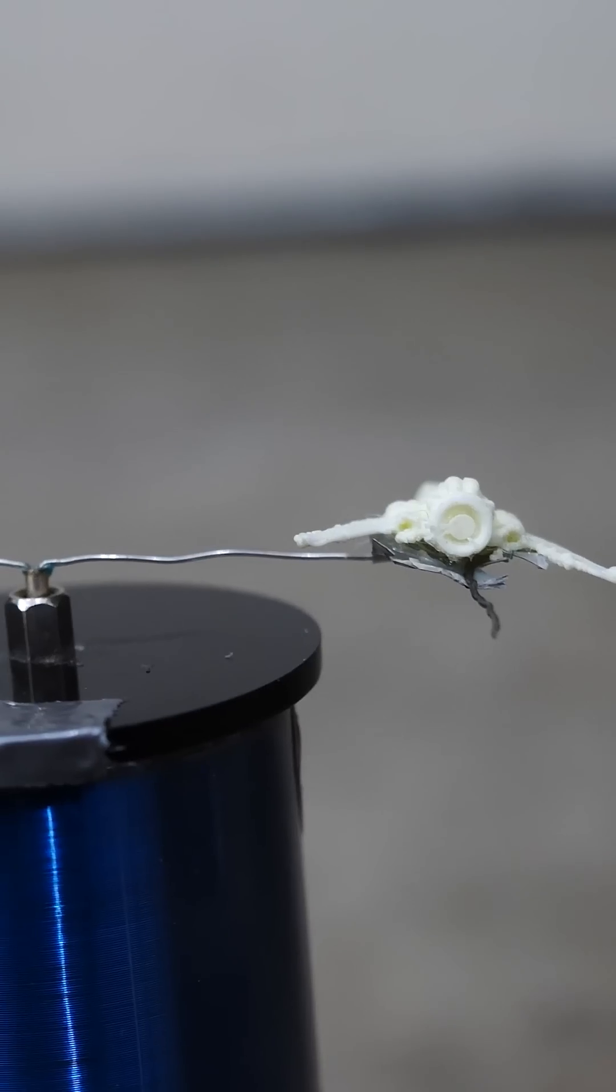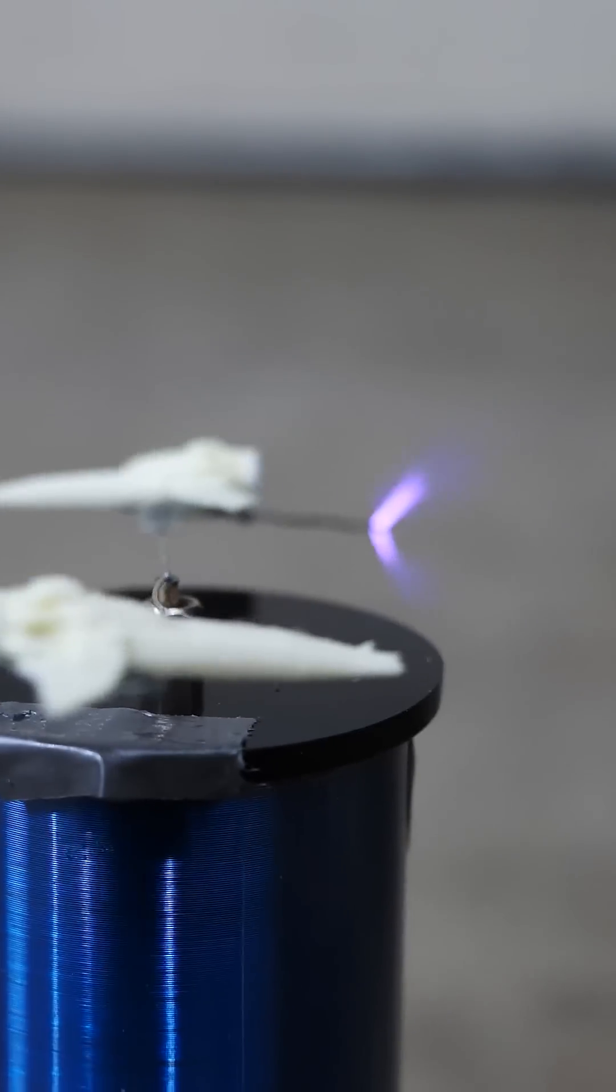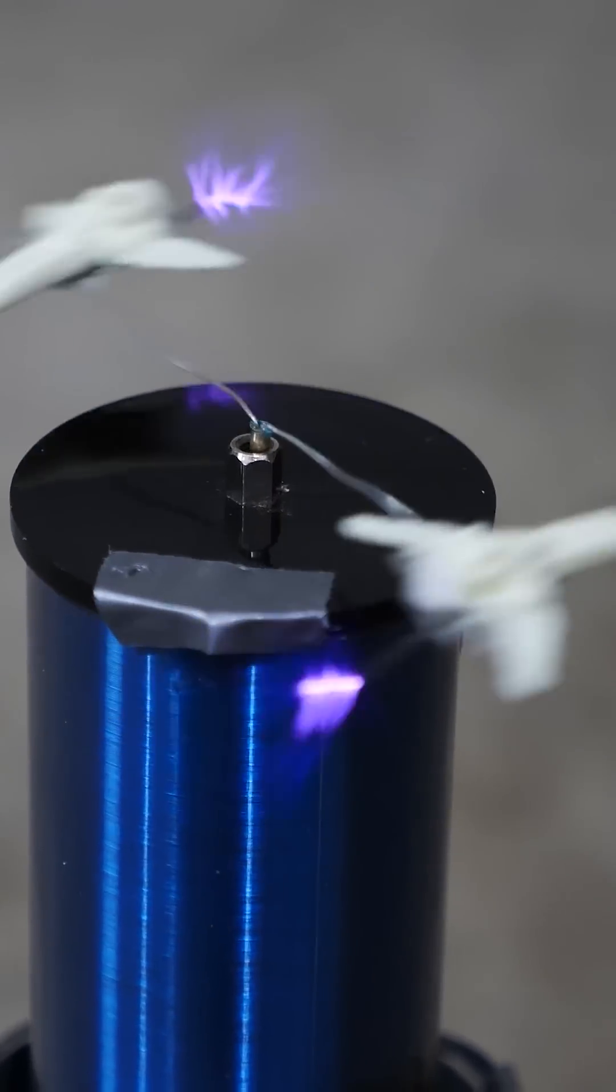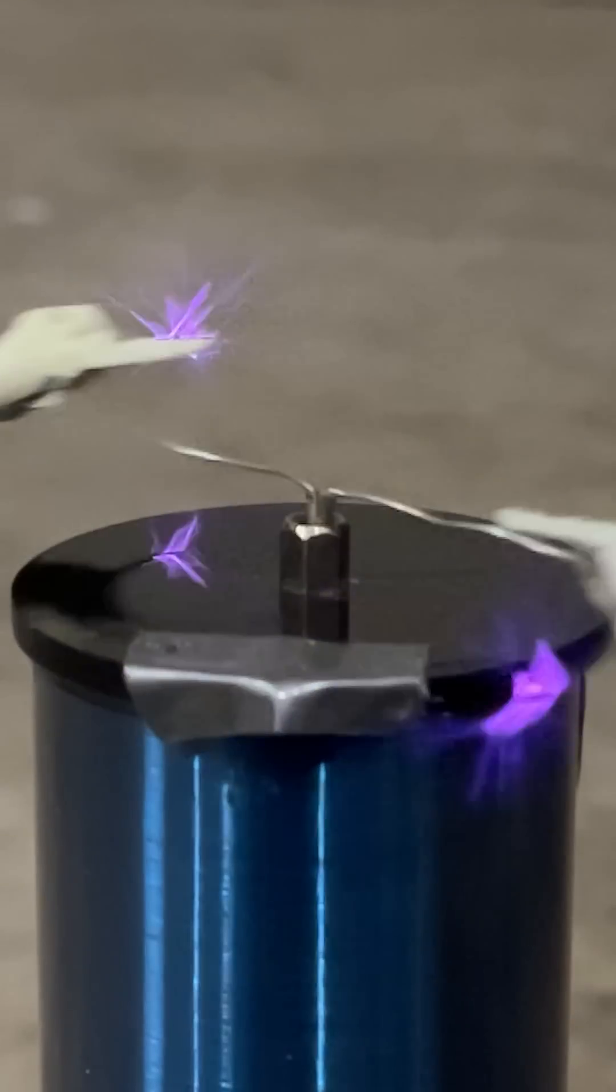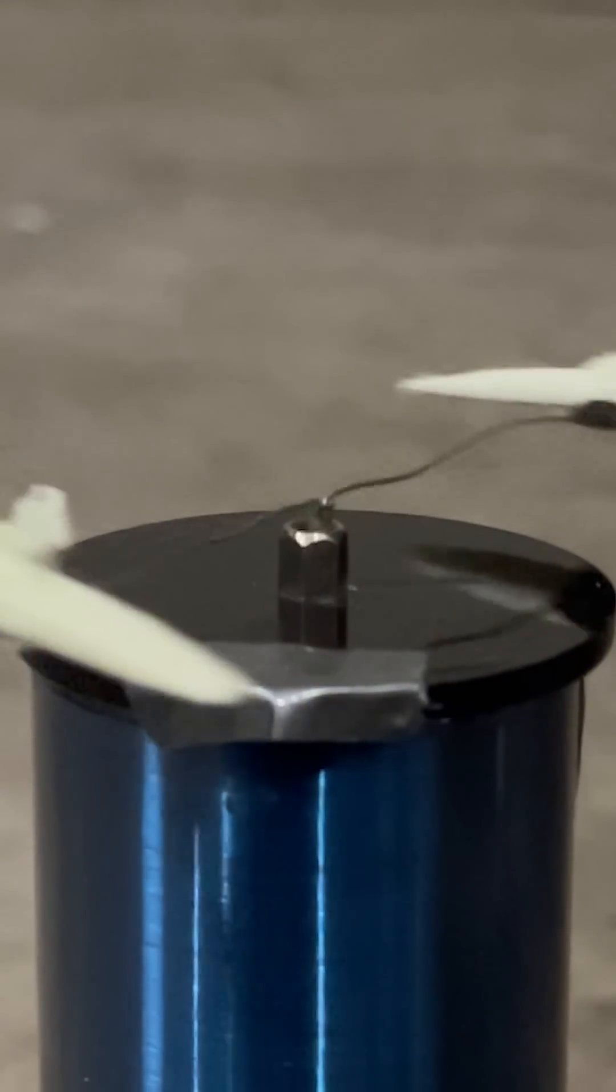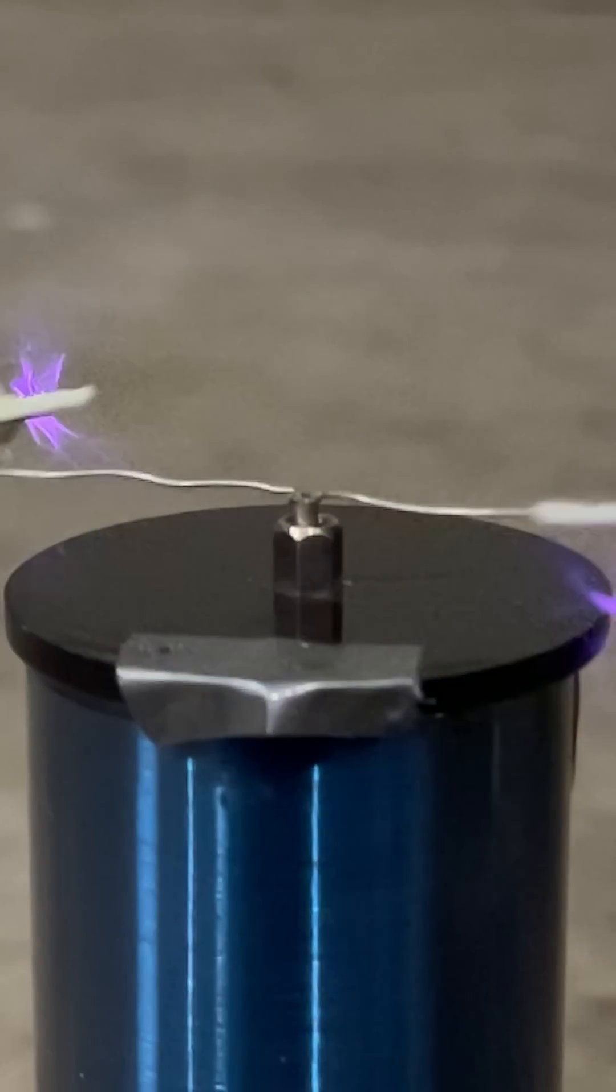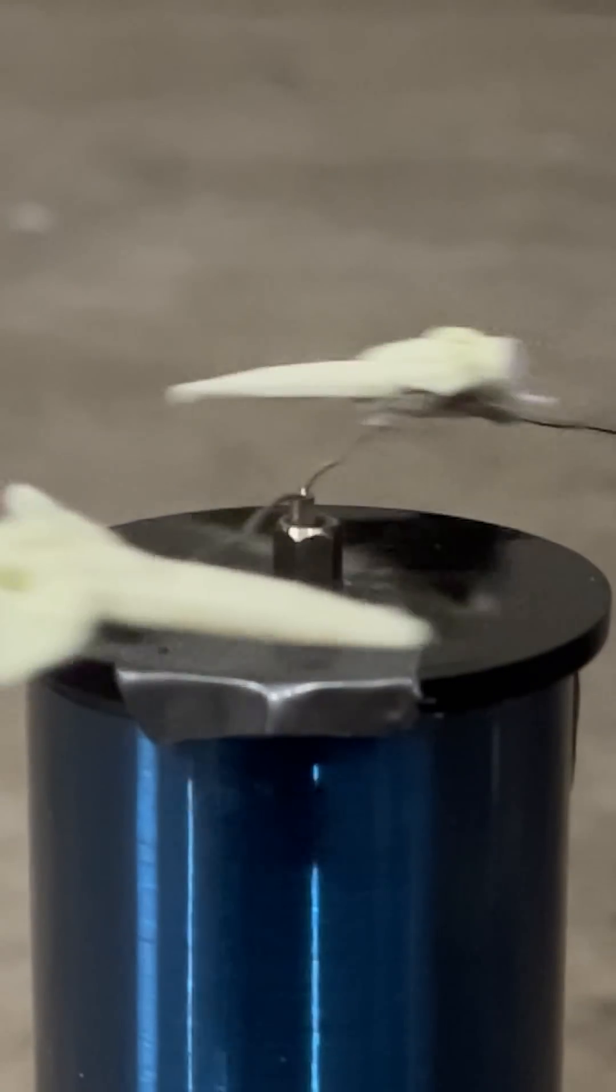And what that means is if we can create a plane that has an onboard power supply that can generate this high voltage, all you need is the pointy end pointing away from the direction you want to go. It will create this neutral wind that moves this way and pushes the aircraft this way.